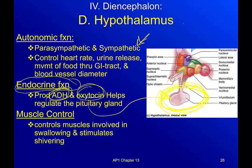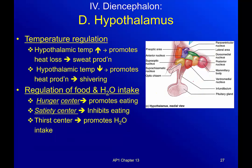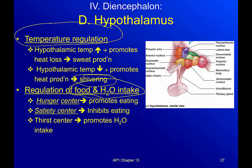The pituitary gland is responsible for releasing a multitude of hormones, and the hypothalamus controls it. For muscle control, it controls muscles involved in swallowing and stimulates shivering when we're cold. For temperature regulation, we literally have a thermostat in our hypothalamus — if that region gets cold, it promotes heat production through shivering and muscle movement. Another part regulates food and water intake: the hunger center gets stimulated and we want to eat; the satiety center, meaning 'satisfied,' inhibits us from eating; and the thirst center promotes water intake.